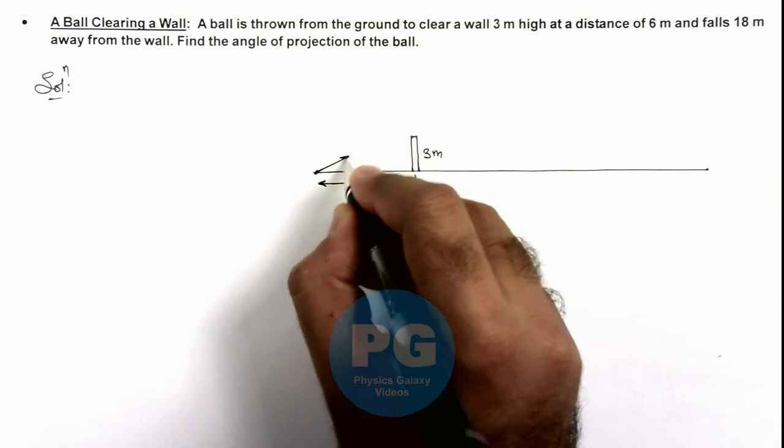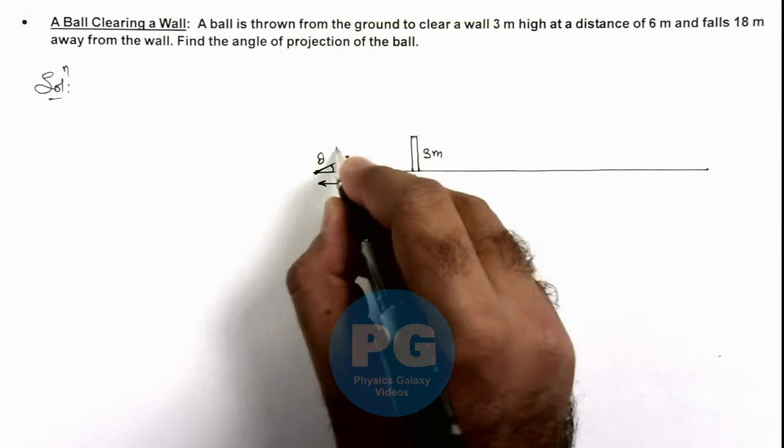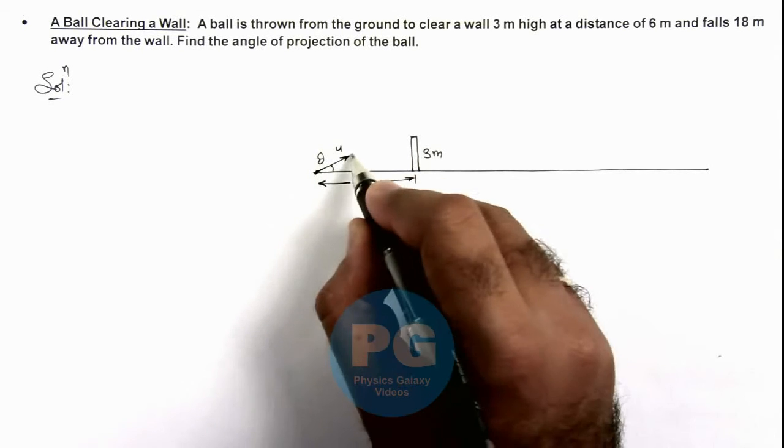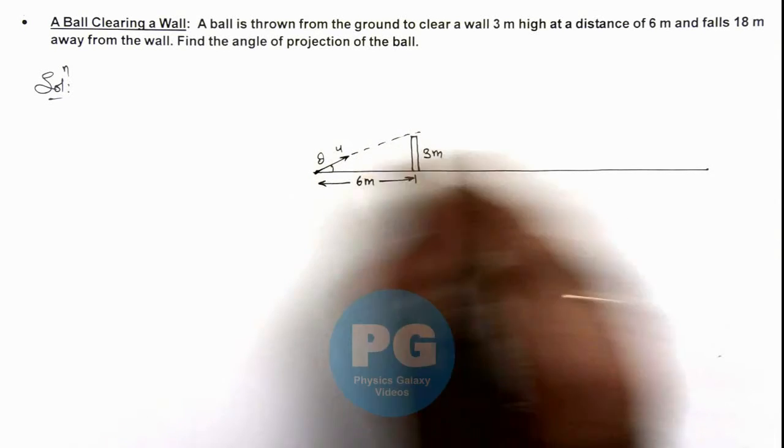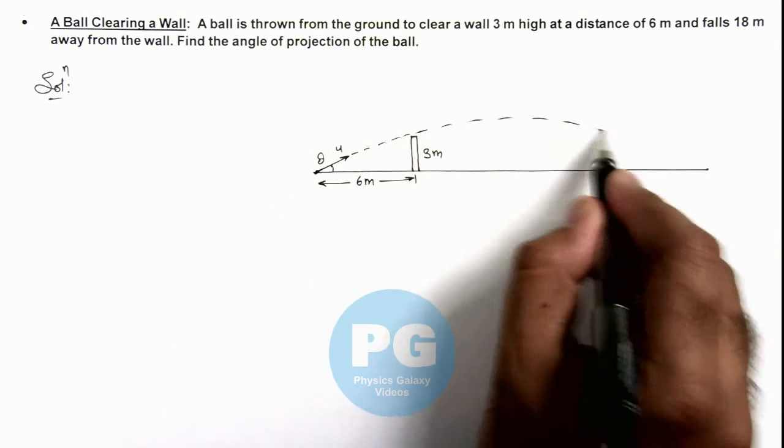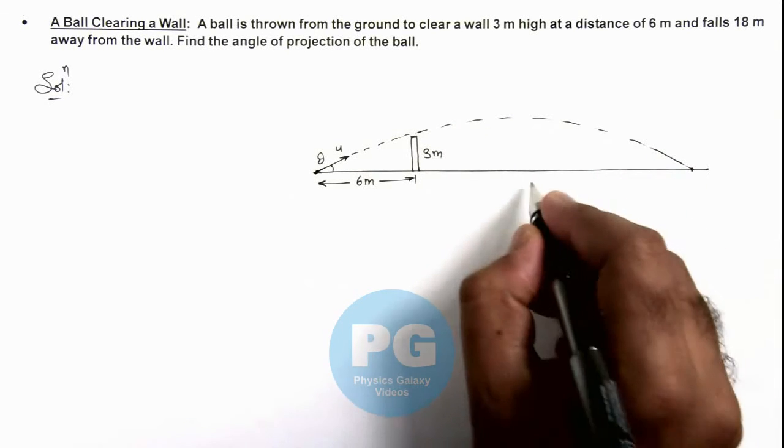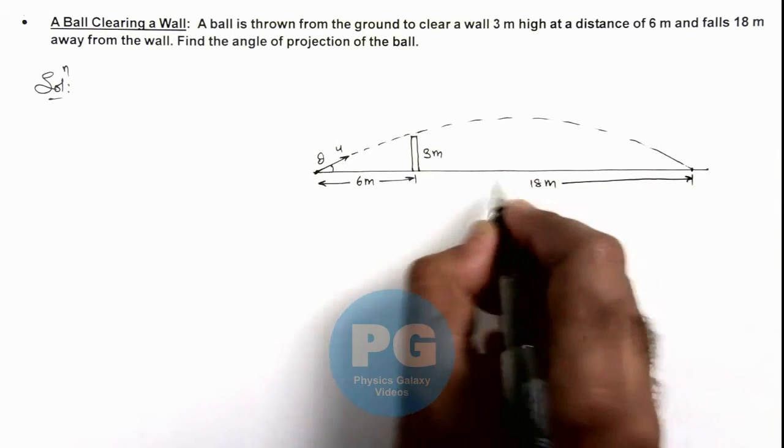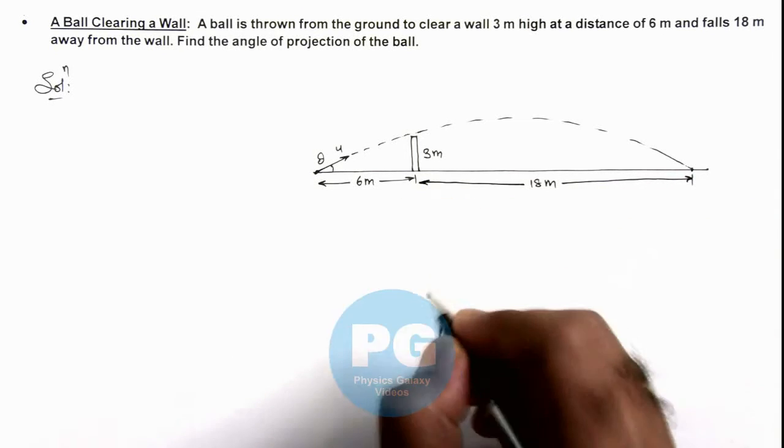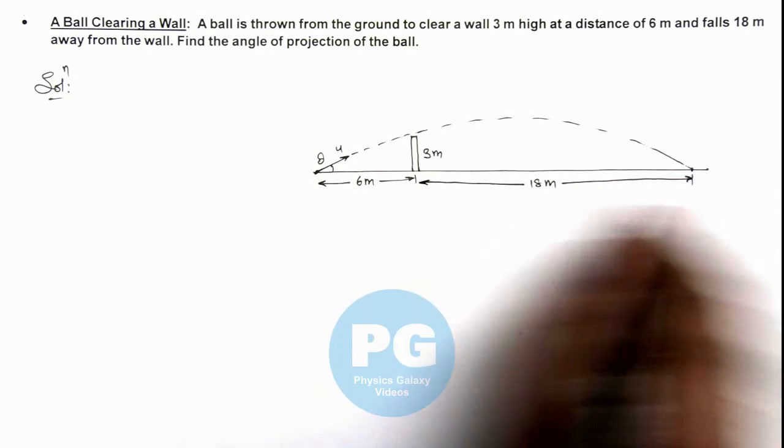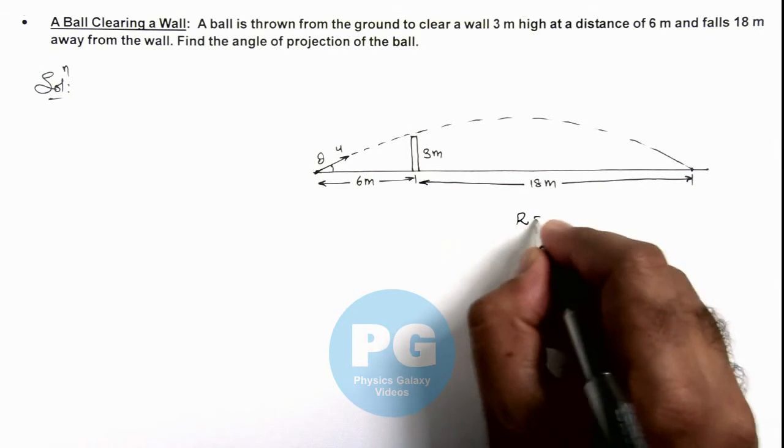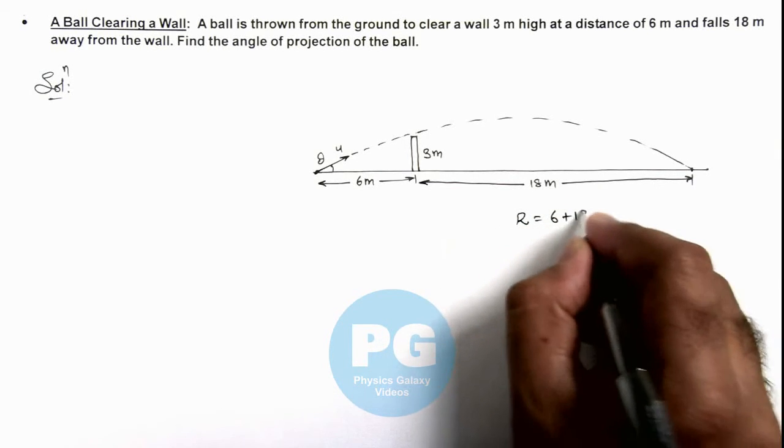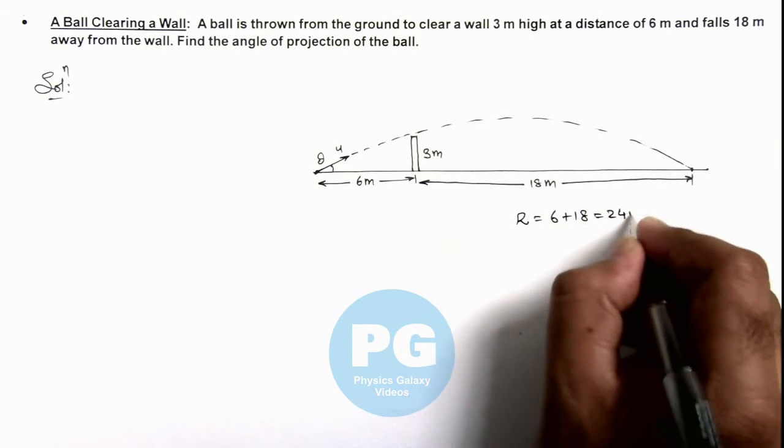And as the ball is thrown at an angle theta with initial speed u, it follows the projectile path, clears the wall, and it falls at a distance of 18 meters away from the wall on the other side. So here we can see the total horizontal range of projectile is 6 plus 18, that is 24 meters.